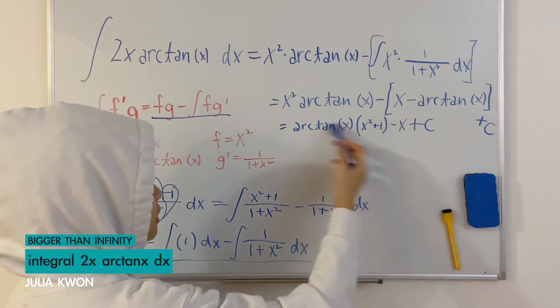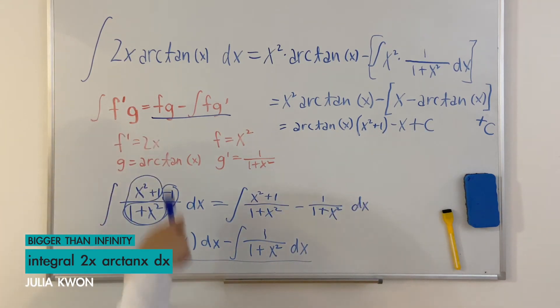That would be our final answer for the integral of 2x times the arctangent x dx.